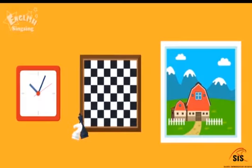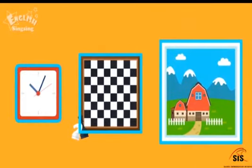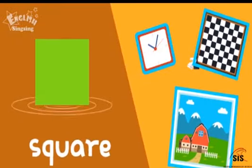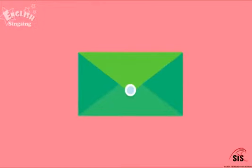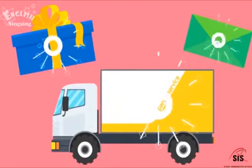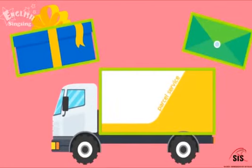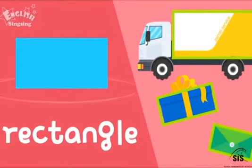Triangle. These shapes are squares. Square. You are right, these shapes are rectangles. Rectangle.